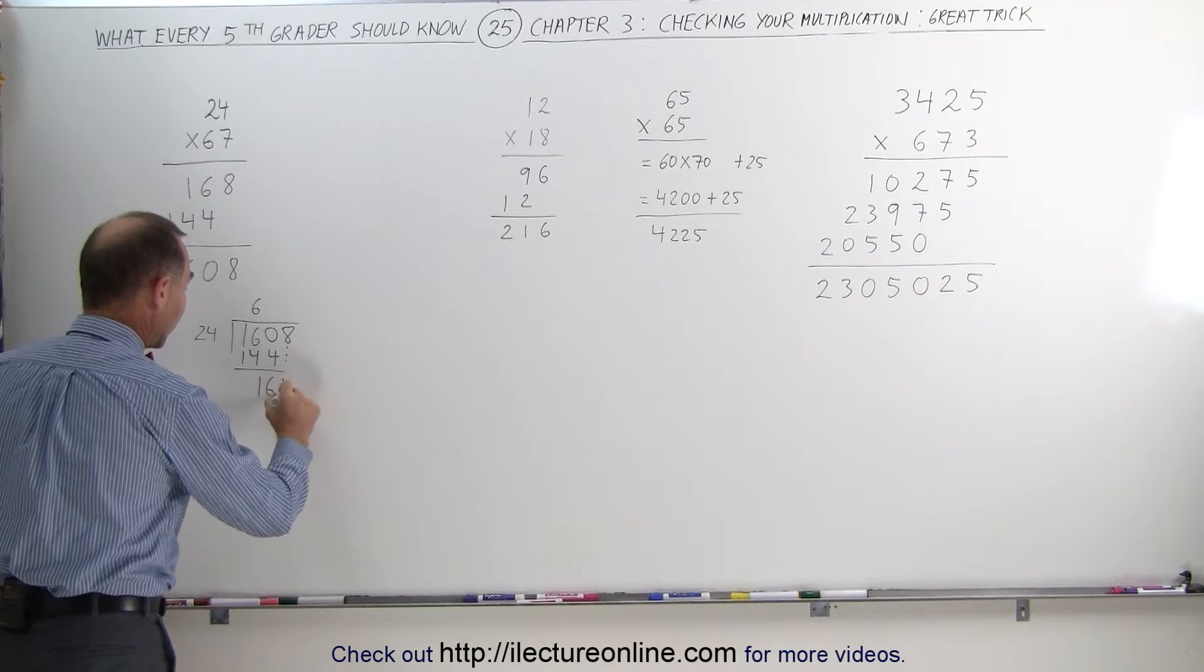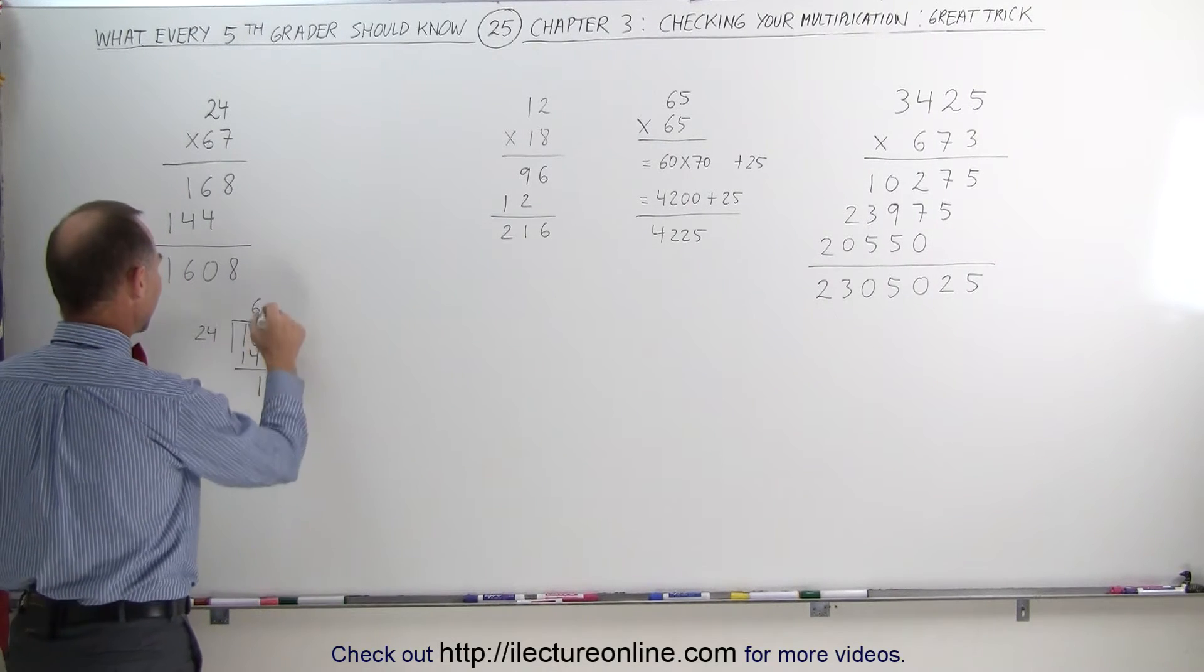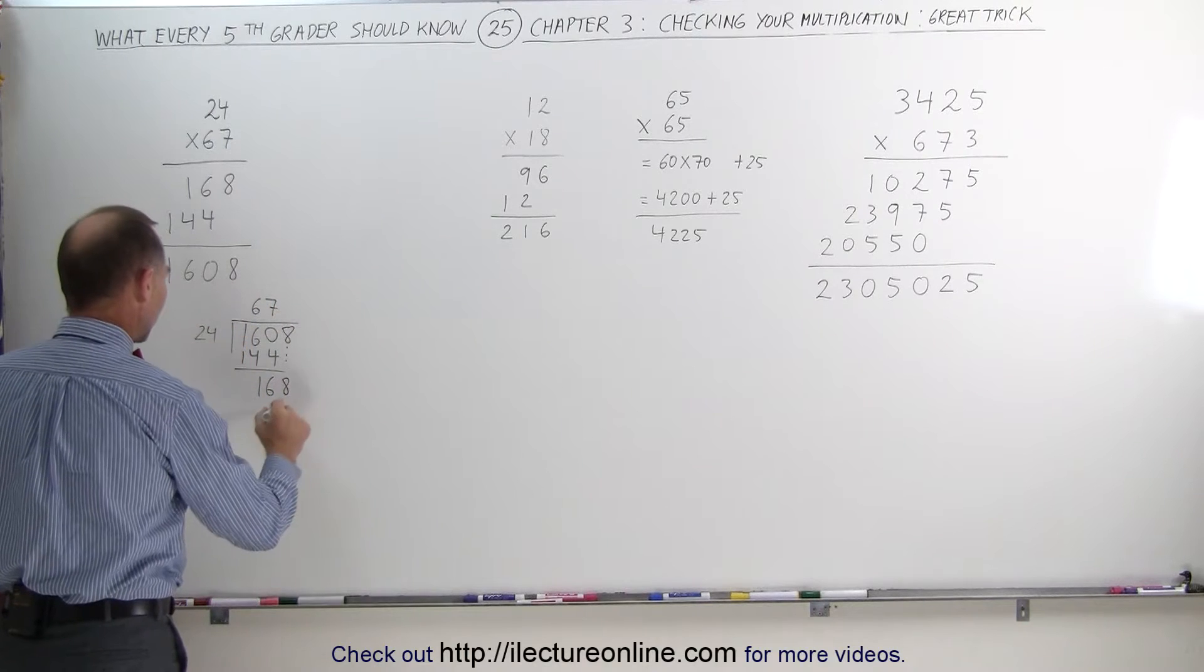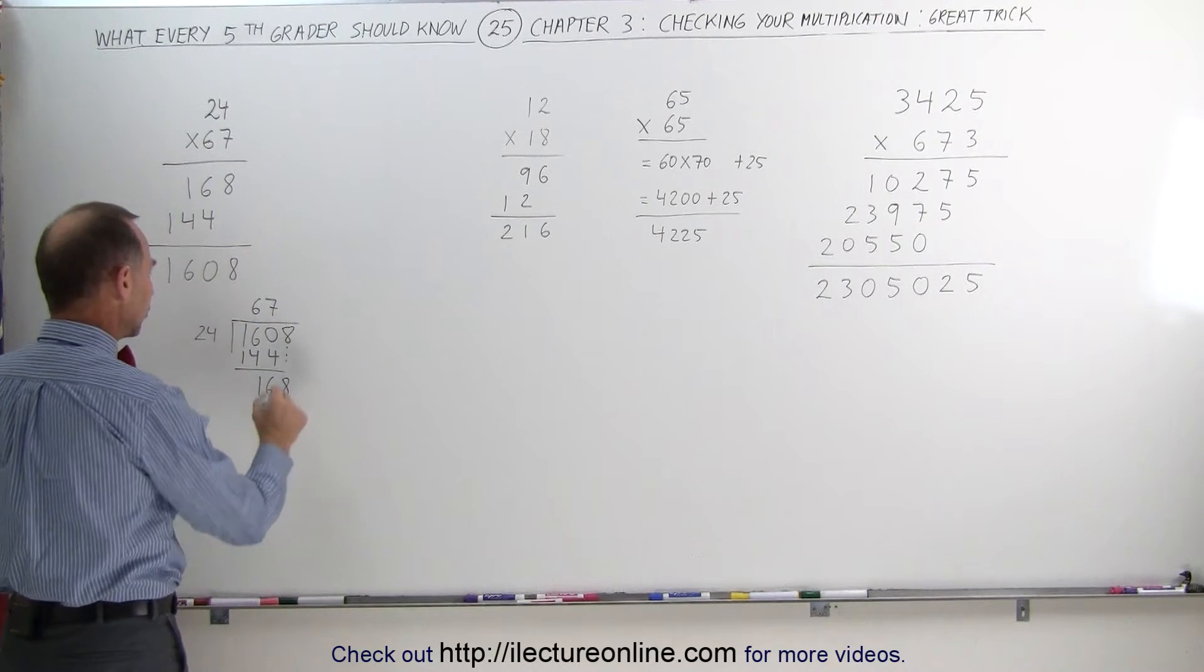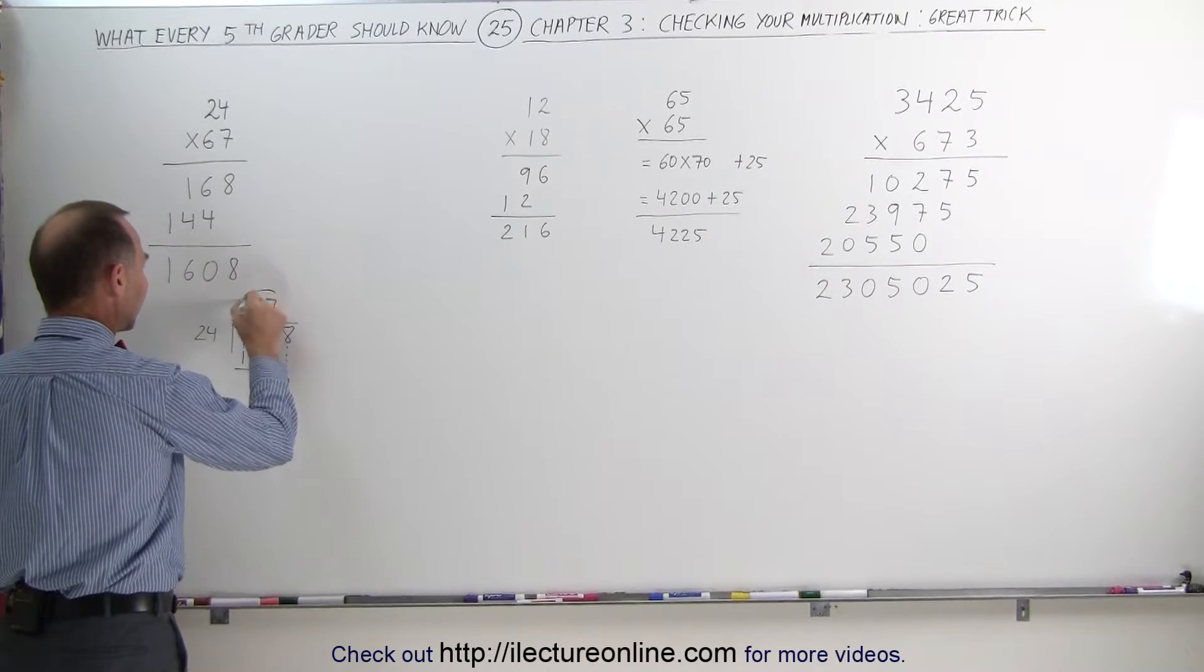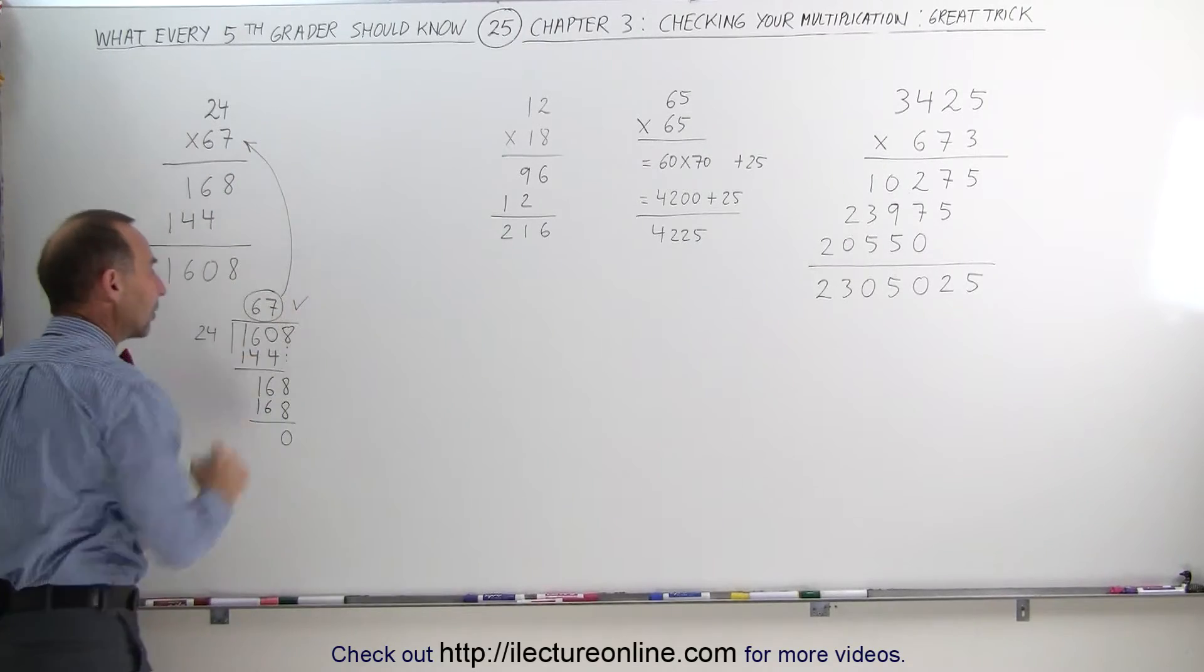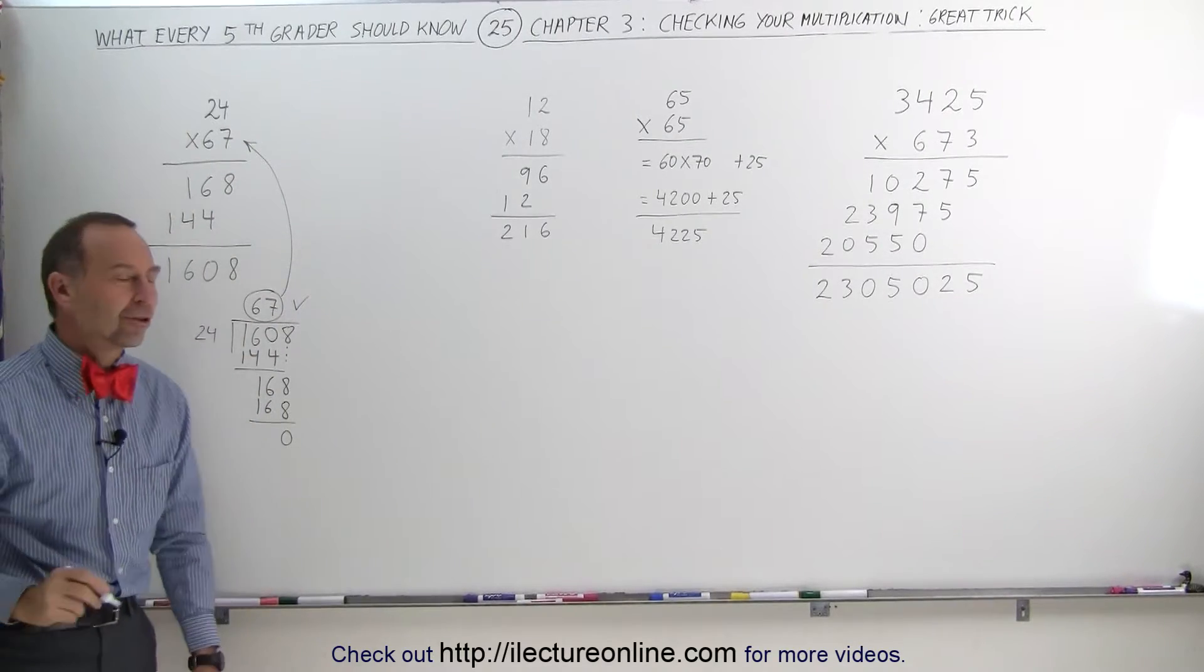Then we would drop the number eight, again 24 goes into 168, well that looks like it may be seven times, seven times four is 28, write down the eight, remember two, seven times two is 14 plus two is 16, and sure enough, 67 is the result, which matches the number over here, and you say, okay, I did the multiplication correctly.